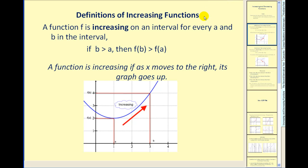Let's start by looking at the definitions of increasing and decreasing functions. A function f is increasing on an interval if for every a and b in the interval, if b is greater than a, then f of b is greater than f of a. So if b is to the right of a, then f of b must be above f of a. Or simply: a function is increasing if as x moves to the right its graph goes up.